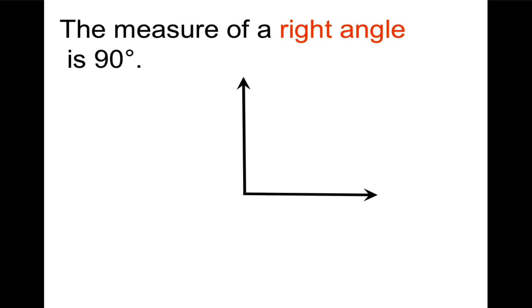A right angle measures 90 degrees. The measure of a right angle is 90 degrees. And there's a symbol that we include. This is the right angle symbol. It looks like a little tiny square that you put in the corner.